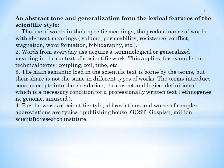Third: the main semantic load in the scientific style is borne by the terms, but their share is not the same in different types of works. The terms introduce concepts into circulation, the correct and logical definition of which is a necessary condition for a professionally written text — for example, ethnogenesis, genomes, sinusoid, etc. Fourth: for the works of the scientific style, abbreviations and symbols of complex units are typical, such as Haus, Gauss, Plan, and Millen, etc.